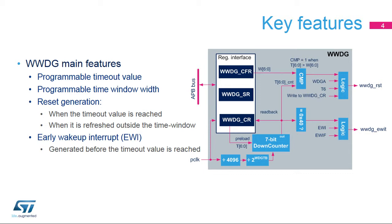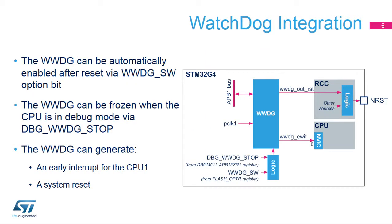As shown in the figure, the window watchdog uses the APB clock, or PCLK, as reference clock for its time base. The PCLK is provided by the RCC block. This clock is divided by 4096 and by a value programmed by the application. The application can also program the reload value of the down-counter bits T[6:0]. The window width is controlled by bits W[6:0]. The WWDG is connected to the APB-1 bus and clocked by the APB-1 clock.